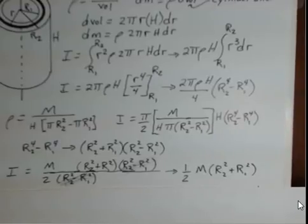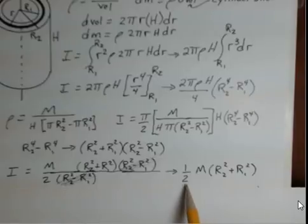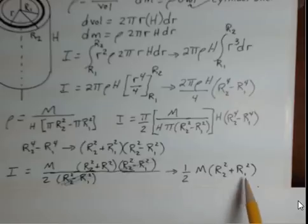And we're left with our result here for the rotational inertia for a hollow cylinder, one-half m, r2 squared plus r1 squared.